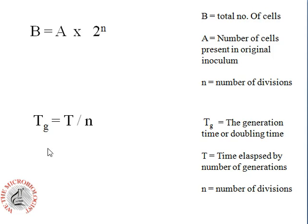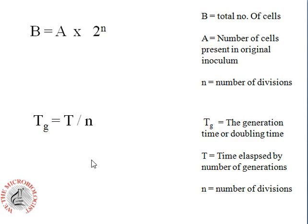The next formula is for generation time: tg equals t divided by n. Here, tg represents the generation time, or doubling time — the time taken for a single generation. t represents the total time taken across n generations. For example, if you are calculating for three generations, t is the time taken from the first to the third generation, and tg is only the time for a single generation. n is the number of divisions.